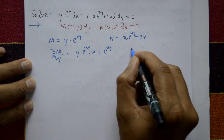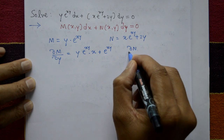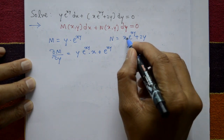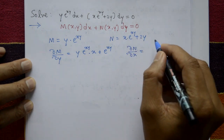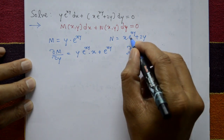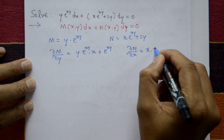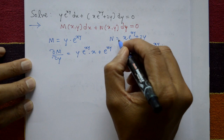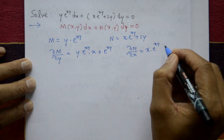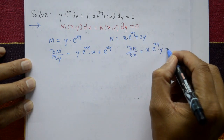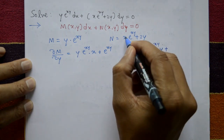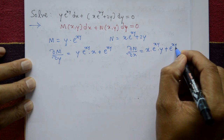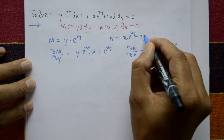Now differentiate N with respect to x partially. Using the product rule: x as it is, differentiate e^(xy) — which gives e^(xy) times y (differentiating xy with respect to x) — plus e^(xy) as it is (differentiating x gives 1). The 2y term is constant with respect to x, giving 0. So ∂N/∂x = xye^(xy) + e^(xy).